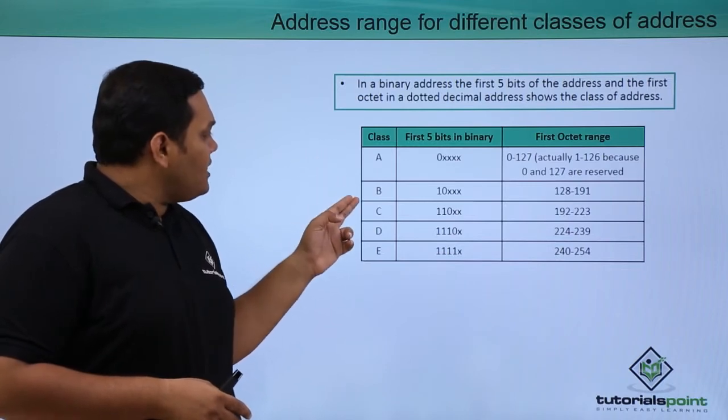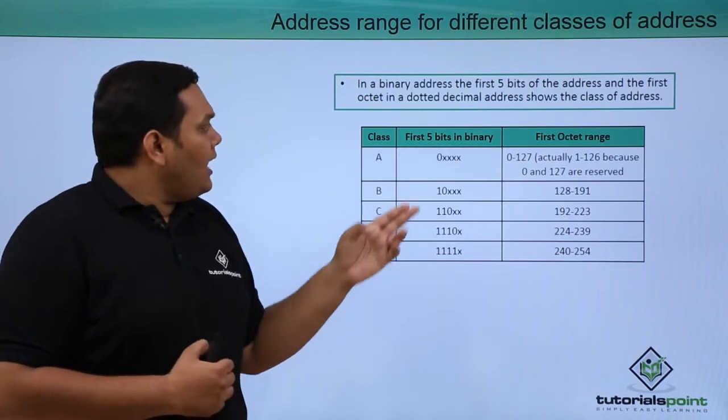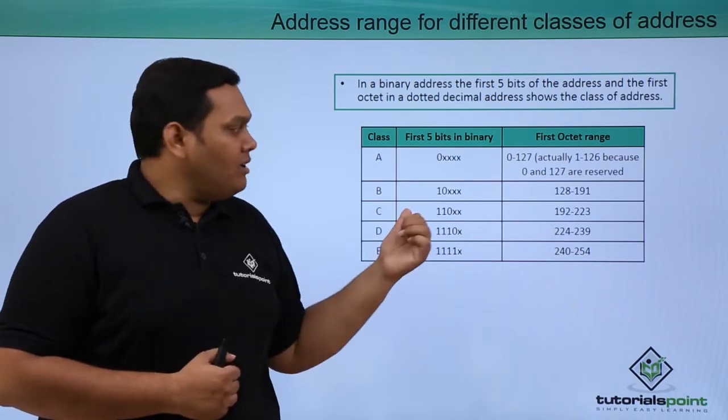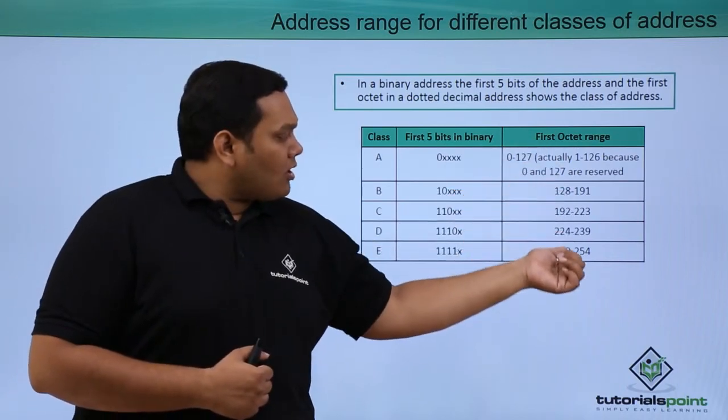You can see class A, B, C, D, E are given here, and the first 5 bits in binary are also given which gives the first octet range.